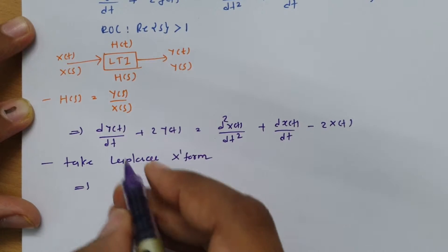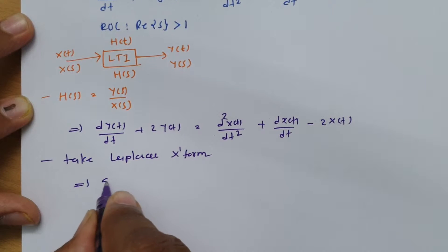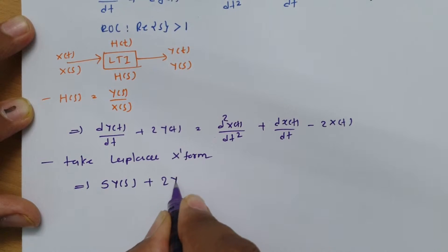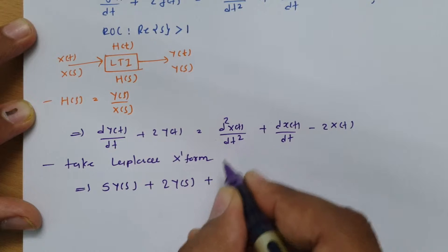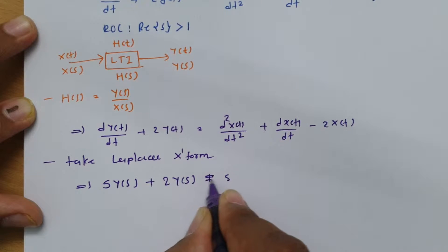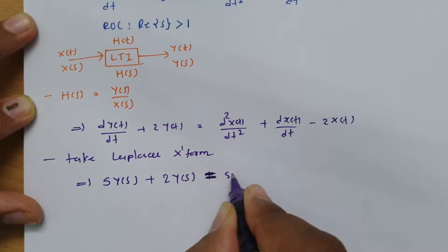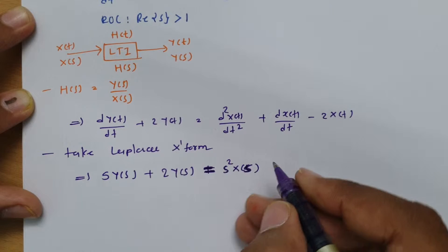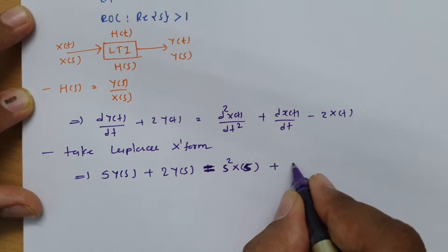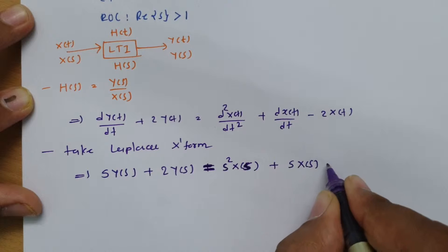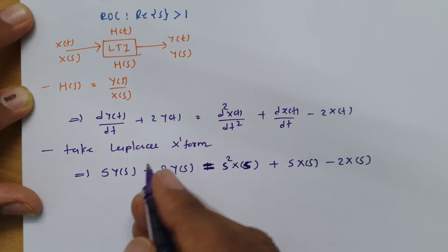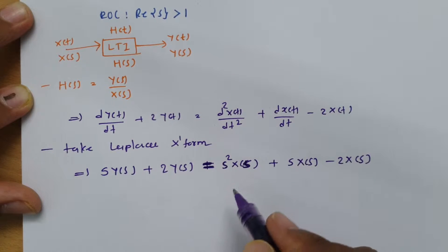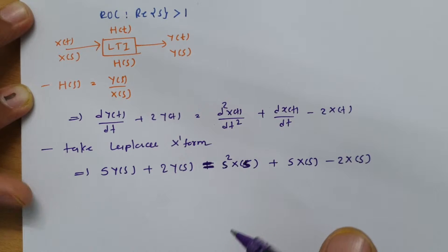Taking the Laplace transform: one-time differentiation of y(t) gives s·Y(s), and the term 2y(t) gives 2·Y(s). On the right side, two-time differentiation of x(t) gives s²·X(s), one-time differentiation gives s·X(s), and the last term gives −2·X(s). So: s·Y(s) + 2·Y(s) = s²·X(s) + s·X(s) − 2·X(s).